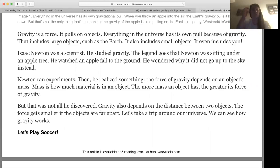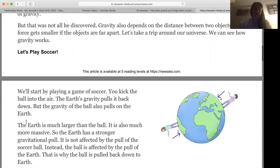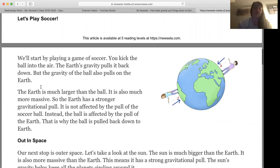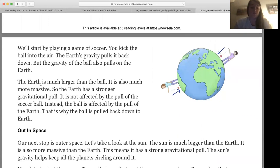Let's take a trip around our universe. We can see how gravity works. Alright, so it says let's play soccer. We'll start by playing a game of soccer. You kick the ball into the air. The Earth's gravity pulls it back down, but the gravity of the ball also pulls on the Earth. The Earth is much larger than the ball, so it is also much more massive. So the Earth has a stronger gravitational pull. It is not affected by the pull of the soccer ball. Instead, the ball is affected by the pull of the Earth. That is why the ball is pulled back down to the Earth.